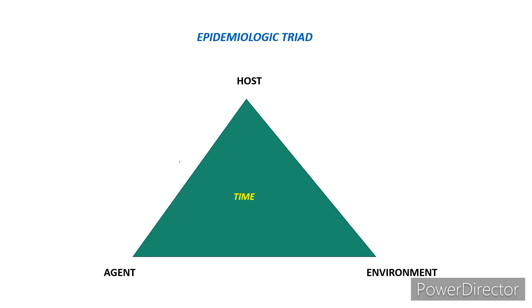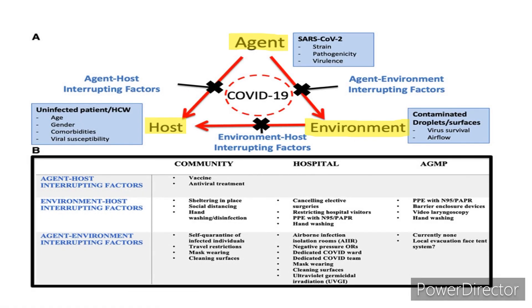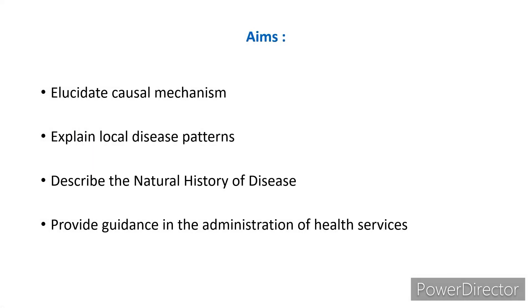The epidemiological triad consists of three parts: host, agent, and environment. For example, in COVID-19, the agent is SARS-CoV-2 (Severe Acute Respiratory Syndrome Coronavirus 2), the host is a healthy or uninfected individual, and the environment involves contaminated droplets or surfaces. There are also other factors interfering at the intersections — between agent and host, agent and environment, and host and environment.